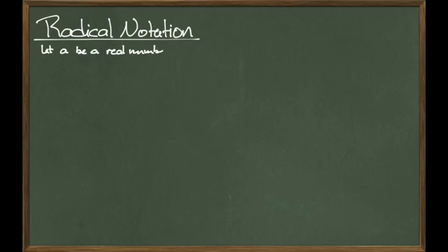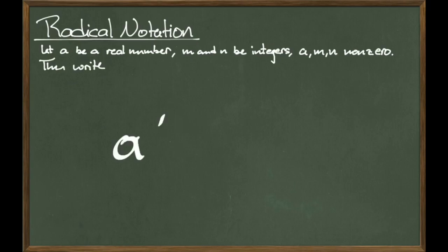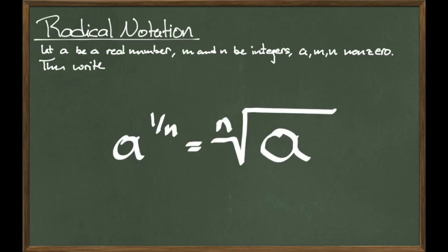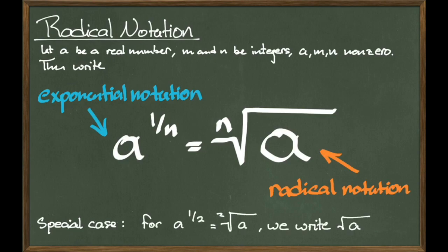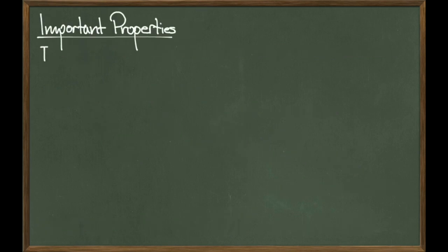It is true that fractional exponents can get a little annoying to write, so we will introduce radical notation — it's just another way of writing the same kinds of things. Let a be a non-negative real number, and let m and n be non-zero integers. Then we can write a to the 1 over n using the radical symbol. This jagged symbol is called the radical, and the wing on the left is where we place our n. So these are both the same expression; we just have two different ways of writing it. The expression on the left-hand side is written in exponential notation, and the expression on the right-hand side is written in radical notation. We do have a special case: when looking at a to the 1-half, we write the radical sign without the 2. Any time you don't see a 2 but you see a radical, it refers to the square root.